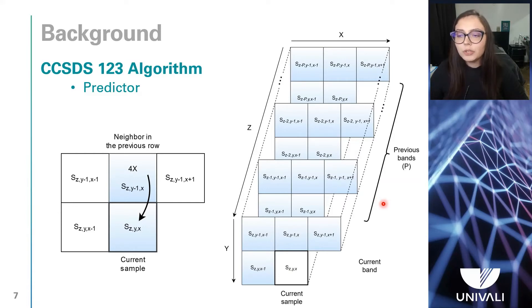The first step is to compute a local sum of neighboring sample values within each spectral band. In the algorithm that we use, the local sum is column-oriented,